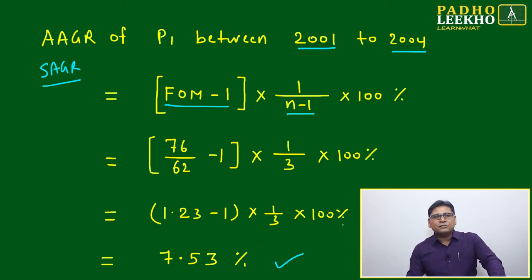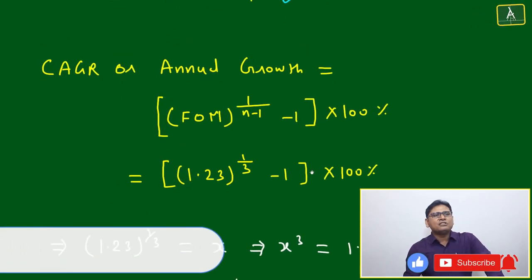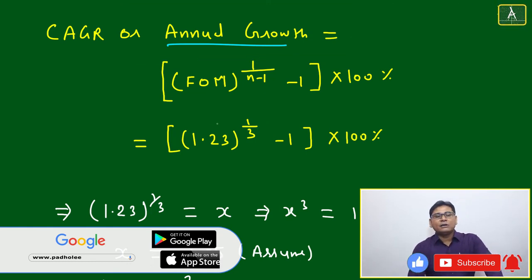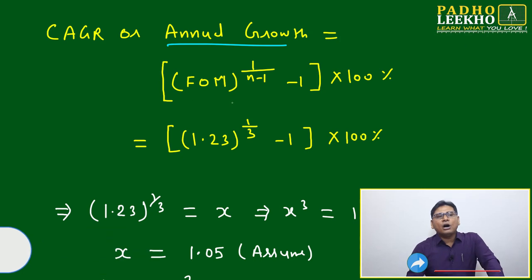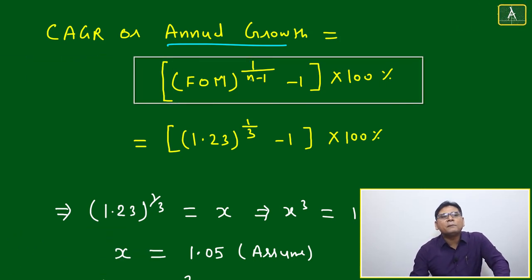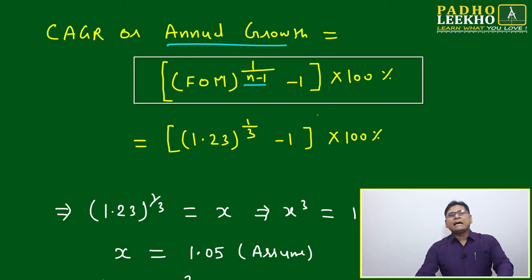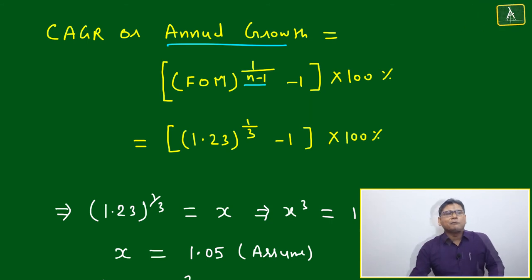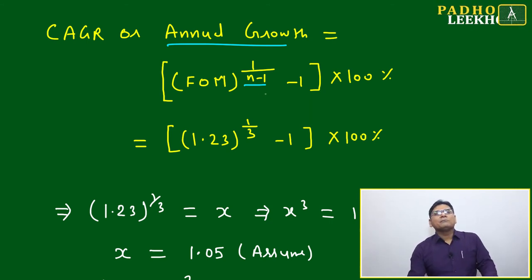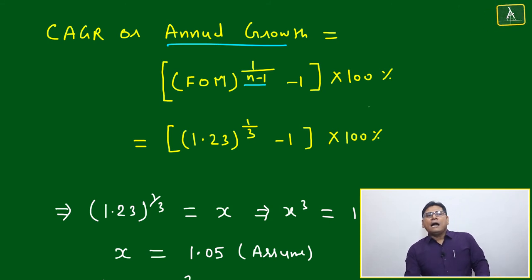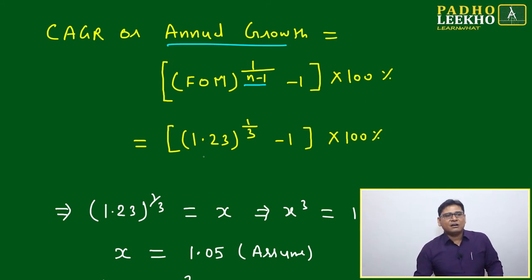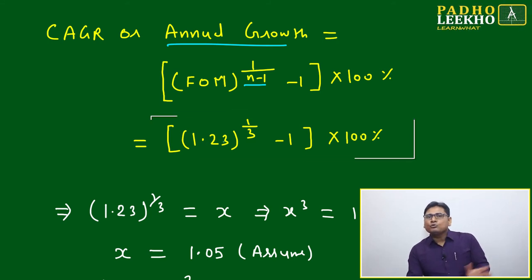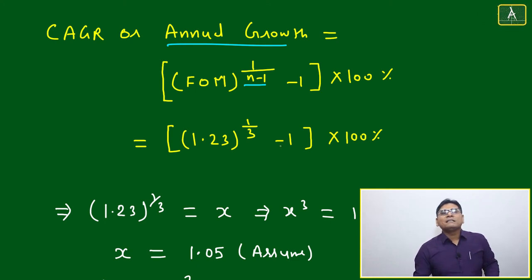For CAGR — also called annual growth rate or return rate — the formula changes: CAGR = (FOM)^(1/(n−1)) − 1, multiplied by 100%. The FOM term is now in exponential form instead of multiplicative. Using the same P1 data from 2001 to 2004, FOM = 1.23, so CAGR = (1.23)^(1/3) − 1, multiplied by 100%.